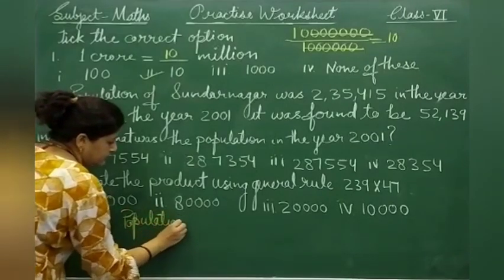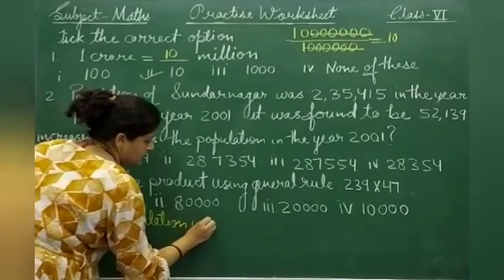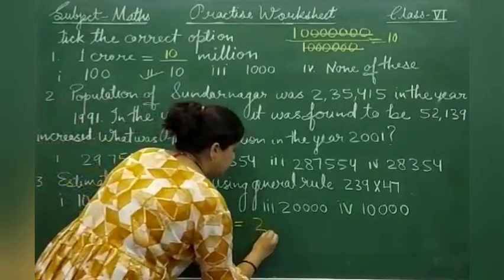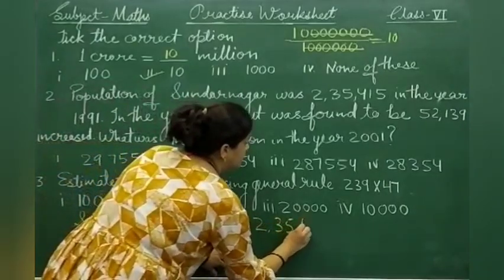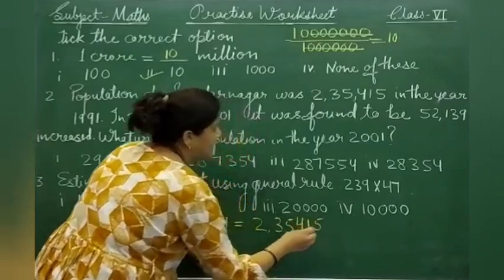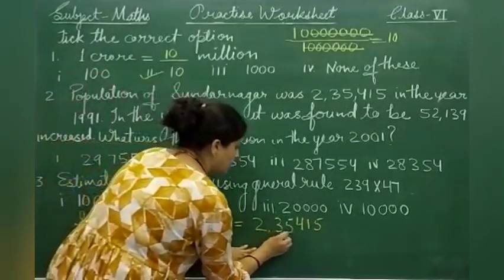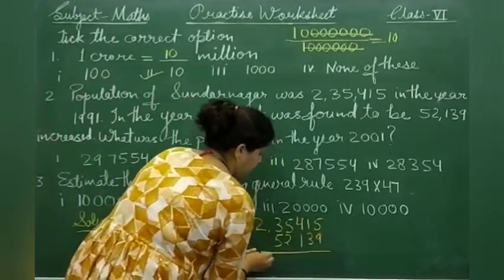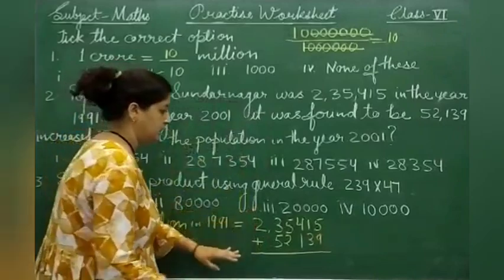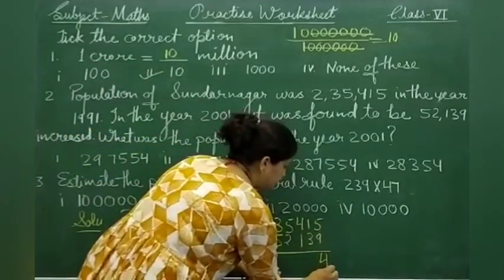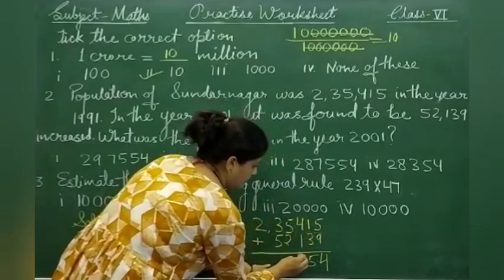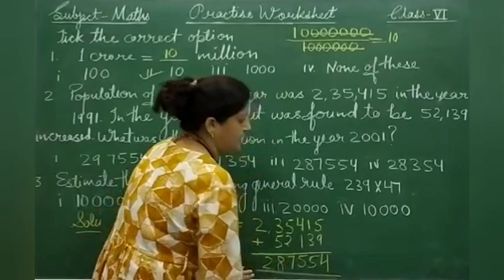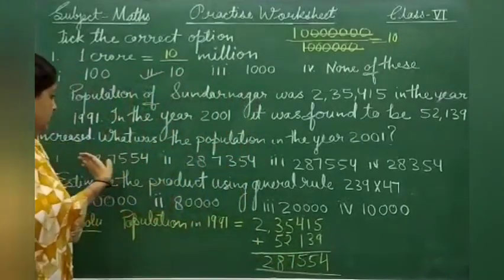The population in 1991 is 2,35,450 and it increased in 2001. Population in 2001 equals population in 1991 plus the increased population of 52,139. You can add the increased population — this will give you the answer. This is the increased population.